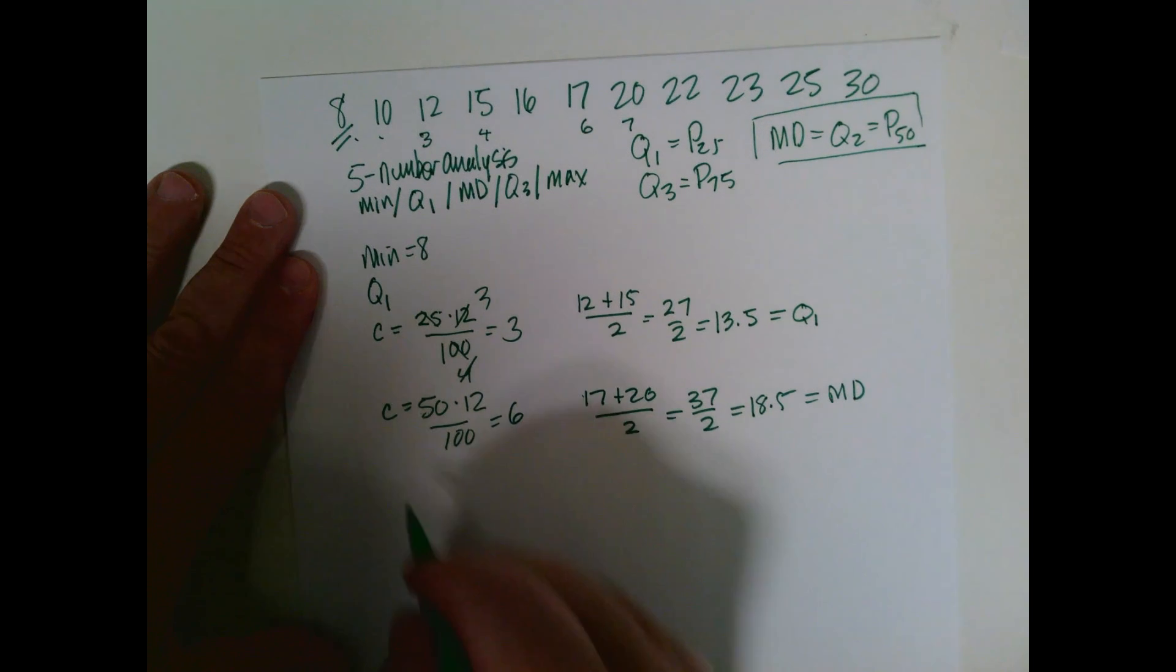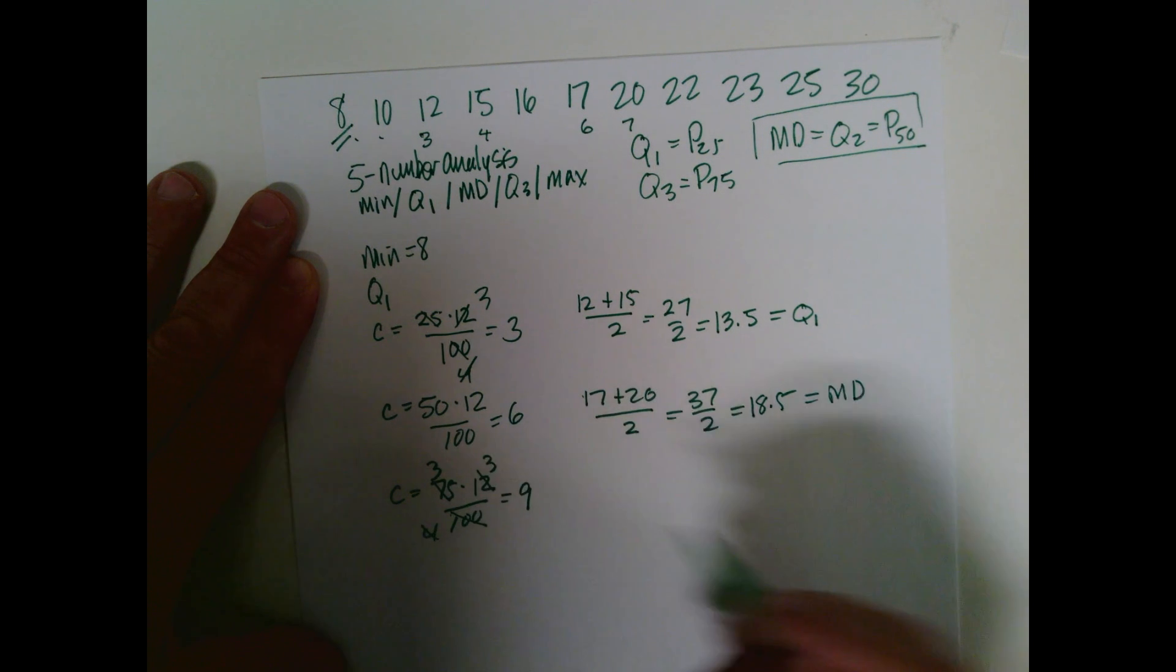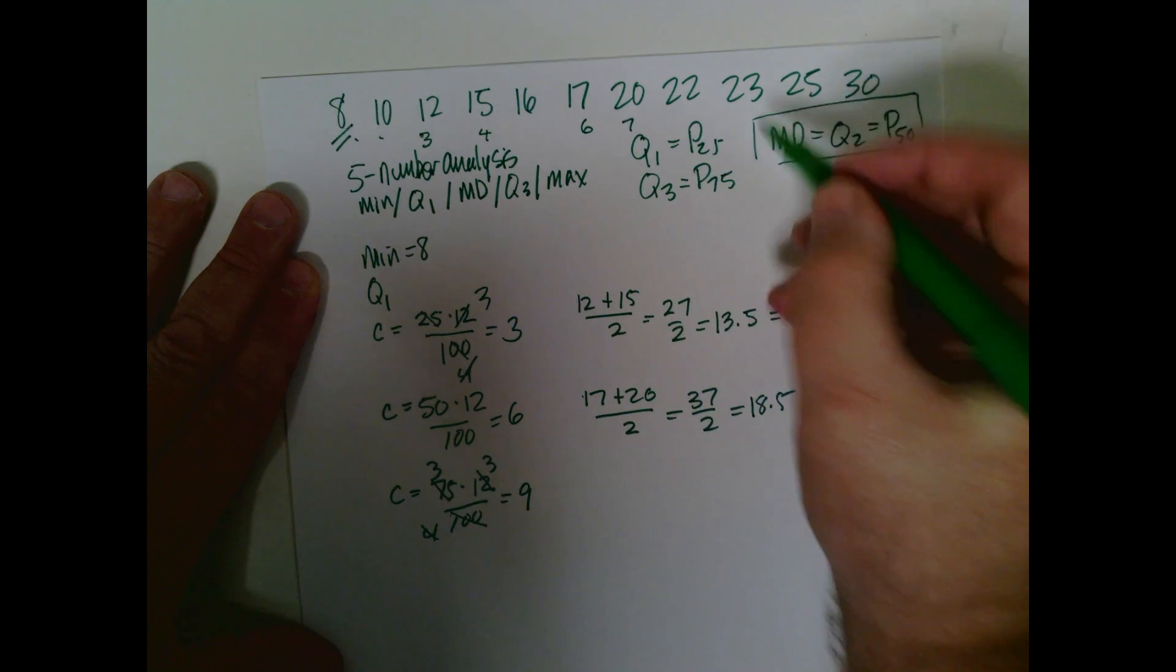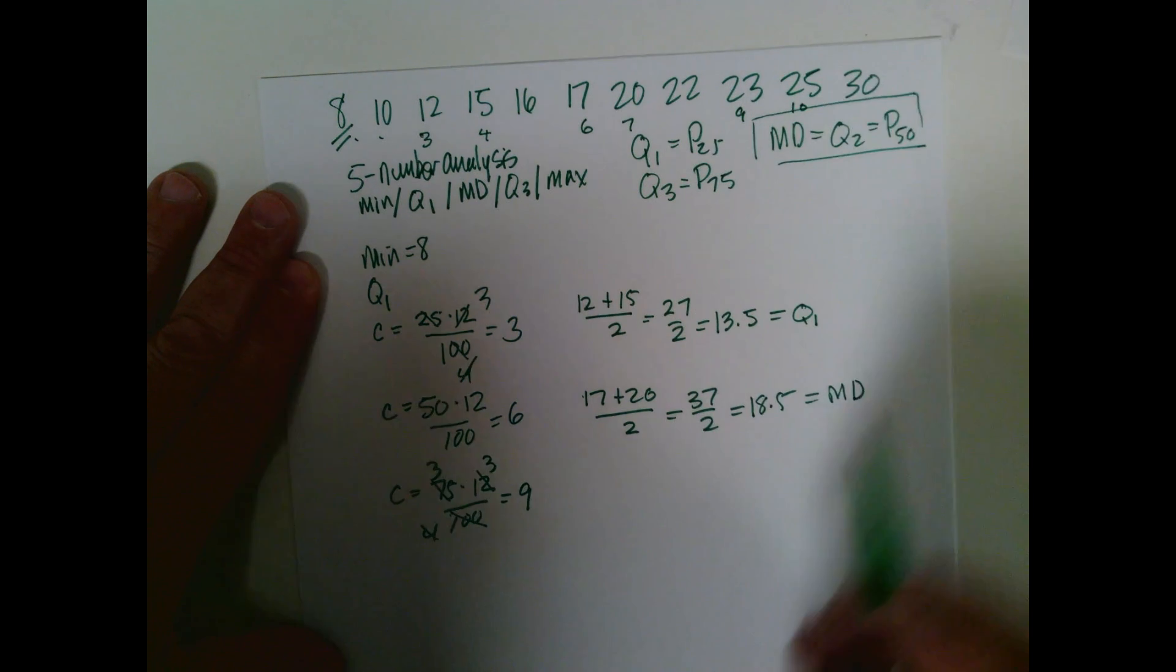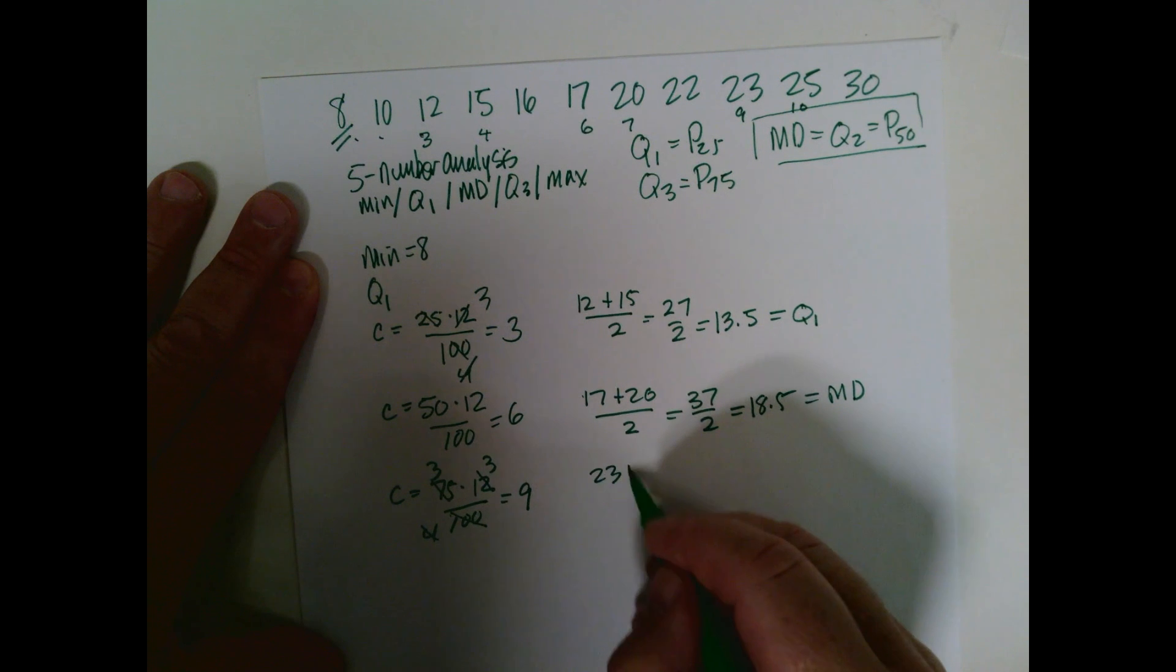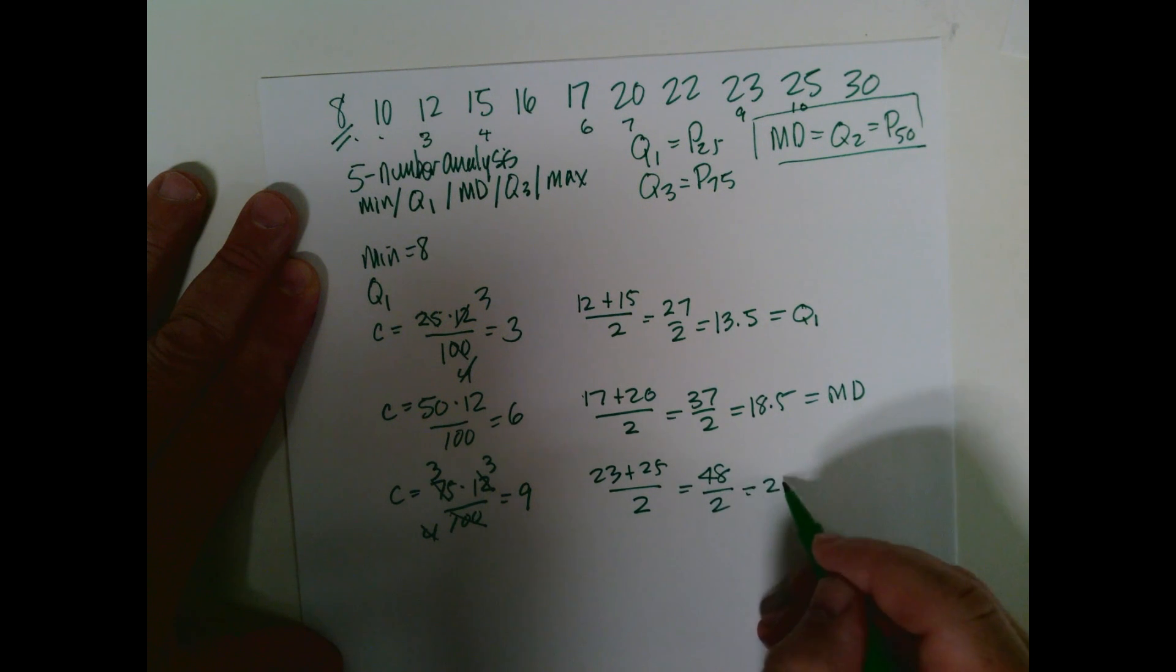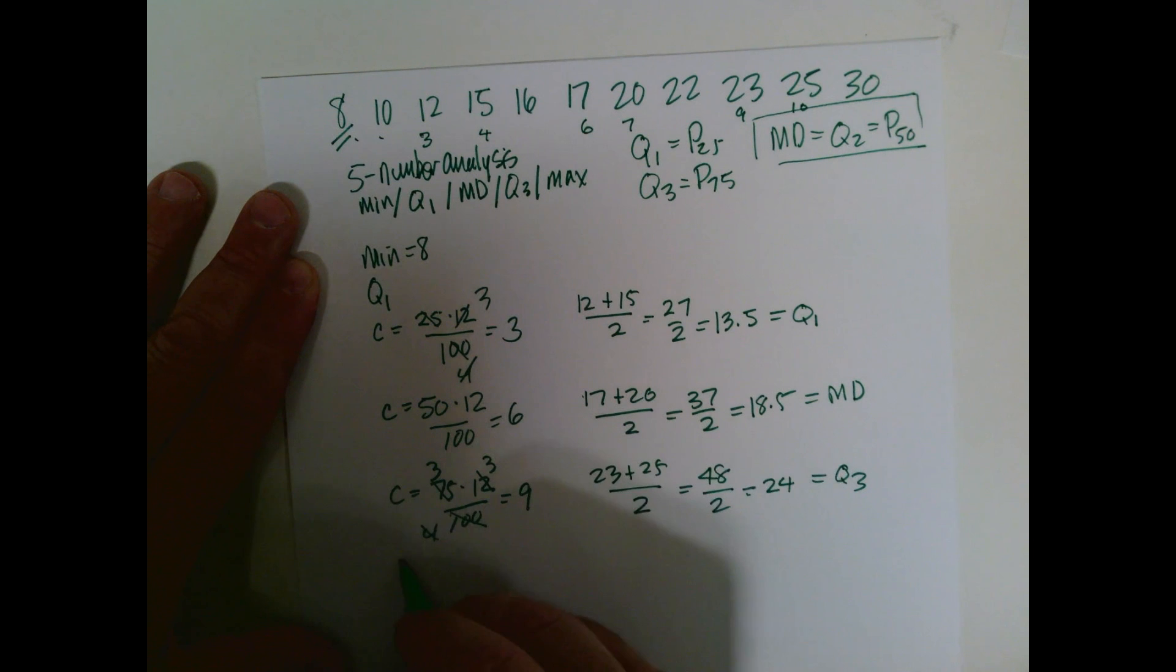Now we get our Q3, which is 75 times 12 over 100. That would be, that's 3 fourths, goes in there three times, so that's 9. So again, it's an integer, so you get 7, 8, 9, and then you go one more 10. So this would be 23 plus 25 divided by 2, which is 48, divided by 2, which is 24. That's our Q3, and our max is 30.